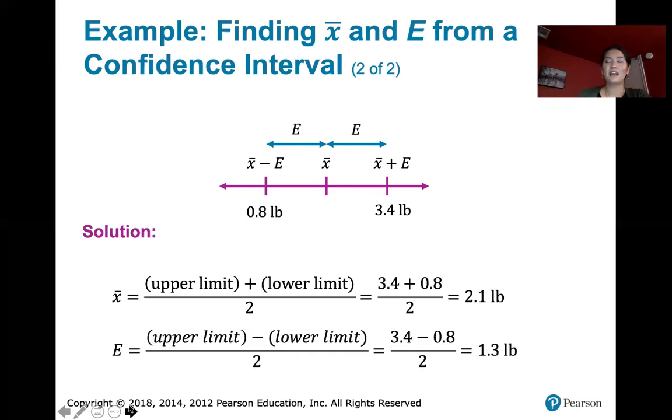And then if I want the margin of error, there are a couple of ways I can do it. I can say this mean is 2.1 pounds. So if I'm going from 2.1 to 3.4, the margin of error must be 1.3, because that's what it would take to get from 2.1 to 3.4.